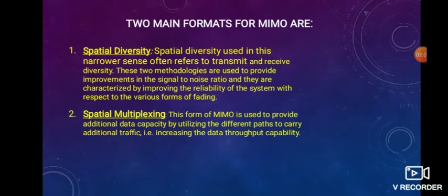In case of spatial multiplexing, this form of MIMO is mainly used to provide additional data capacity. Various users' data are multiplexed — that is, added together and sent through a channel. Data capacity is increased by utilizing different paths to carry additional traffic, increasing data throughput. Therefore, data reliability is increased, information capability is released, and users get more benefit.